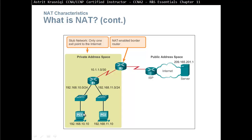I've heard the term that private addresses are not routable, but that's not true at all, because this router is going to route the network from this to this network. Obviously the private address is routable. They are not routed by internet routers because all of them have an access control list that says a source address coming in should never be a private address — the ISP will deny any packets with a private source address.